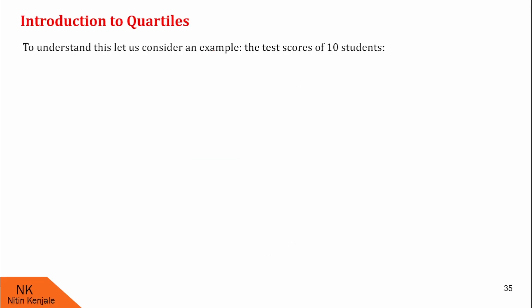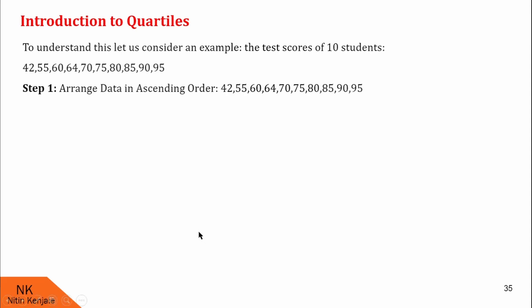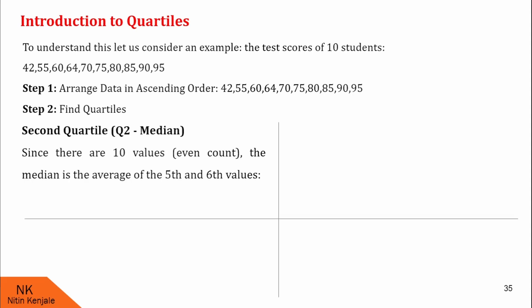Consider an example: the test scores of 10 students are given. Let us first arrange this data in ascending order. We will first find quartile two, which is the median of the data. Here there are 10 values, so the median lies between the fifth and the sixth value — it is the average of those two. I found quartile two is (70 + 75) / 2 = 72.5. So this is our quartile two, which is also our median.